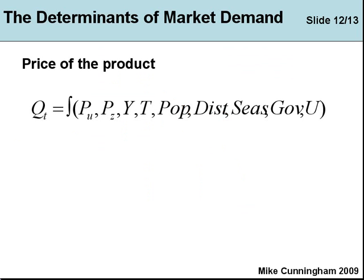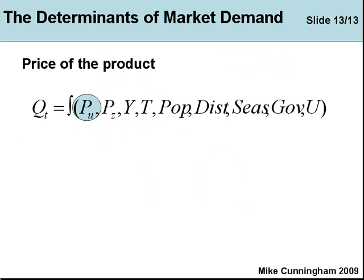Remember this. This is our full classification of what determines demand — all the variables we listed earlier. We've focused in on the first one and explained that as the price falls more is demanded, and as the price goes up less is demanded. In other sessions we'll look at each of the other variables. But for now, if one of those other variables changes, it will change the position of the demand curve — the curve will shift inwards or outwards. A change in price causes a movement along the demand curve, but a change in any of the other variables causes a shift of the curve.